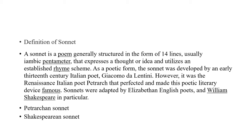The Petrarchan sonnet has two main parts within its 14 lines. The first is called the octave, which has eight lines, and the rhyme scheme of these eight lines is: A B B A A B B A. It is followed by the sestet, which has six lines, and the rhyme scheme of the sestet is C D E C D E, or some variant such as C D C C D C.